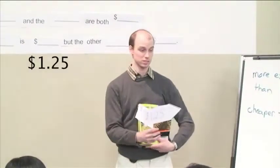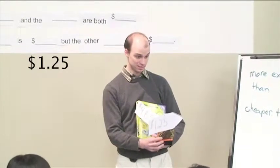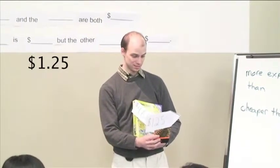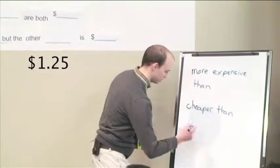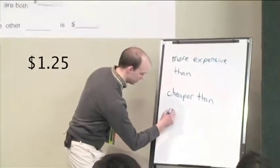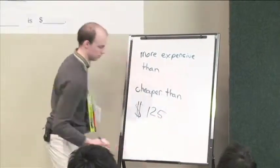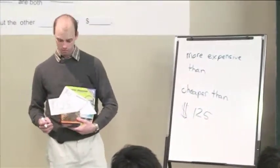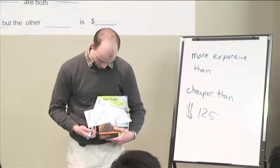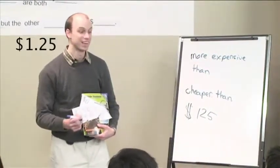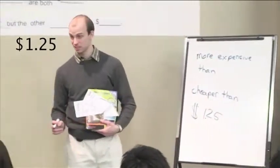How much is this? How much is this, Lair? One hundred and twenty-five. One hundred and twenty-five? Not quite. One hundred and twenty-five is like this — one hundred and twenty-five. Is that one hundred and twenty-five? No, because of this — one dollar and twenty-five cents. That's right. One dollar and twenty-five cents.